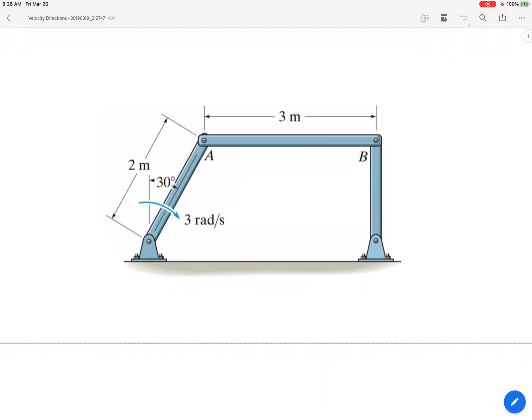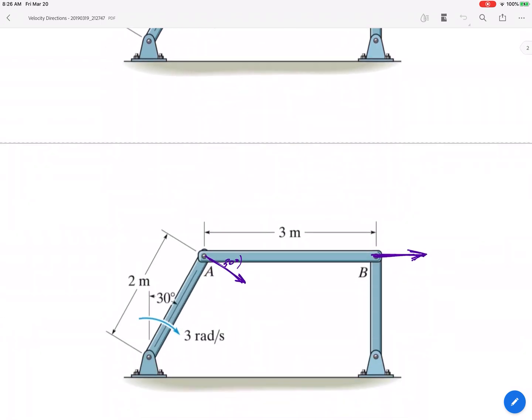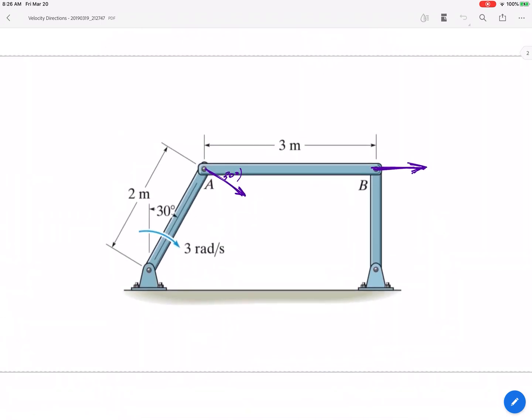So go through this PDF and look at this one, and then switch to the next page. So this shows the directions. Could you tell, and did you know that the velocity of A was down at that 30 degree angle? Did you know that the velocity of B was perfectly horizontal?